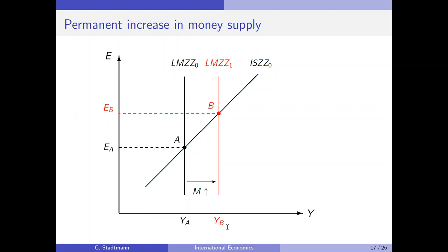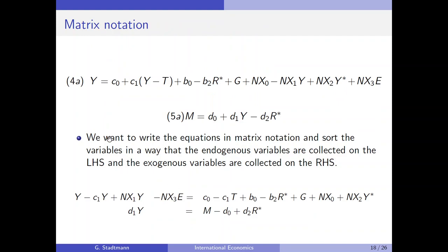Now let's confirm these graphical results by performing formal analysis — specifically, computing multipliers. We want to verify that GDP really does increase when the central bank increases money supply. We work with the IS-ZZ equation, which includes the foreign interest rate, and the LMZZ equation, also in equation 5a, which also includes the foreign interest rate.